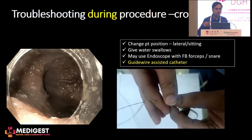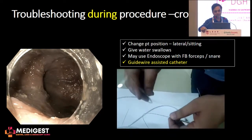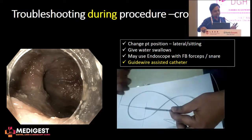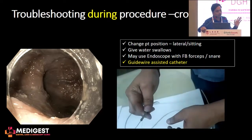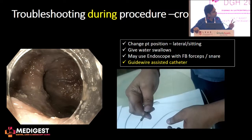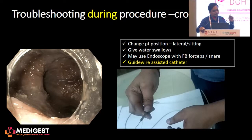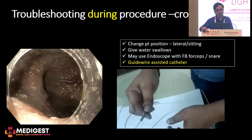An important challenge is patients with end-stage achalasia where there is a grossly dilated esophagus and you are unable to negotiate the catheter across the lower esophageal sphincter. In these cases, certain maneuvers can help: changing patient position to left lateral or sitting, giving water swallows, using an endoscope with foreign body forceps, or using a guide wire-assisted catheter. Some companies produce catheters where a guide wire can be inserted inside, which increases stiffness and allows more effective intubation across the LES.